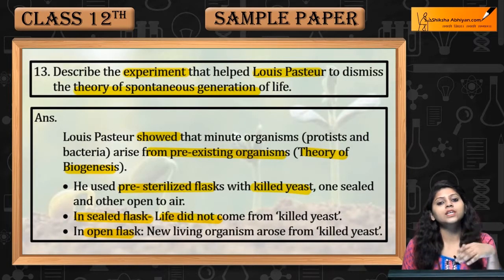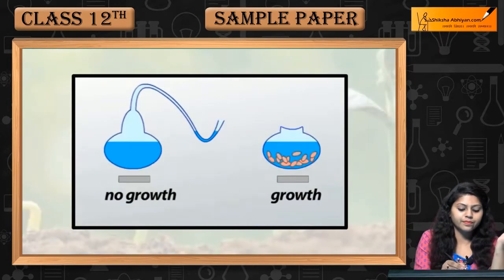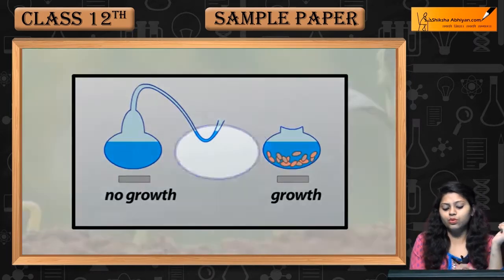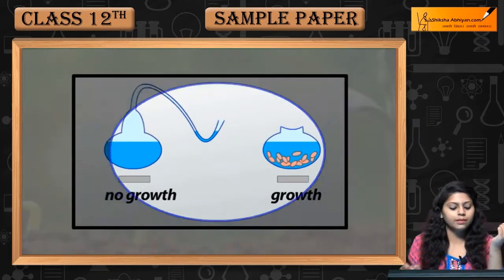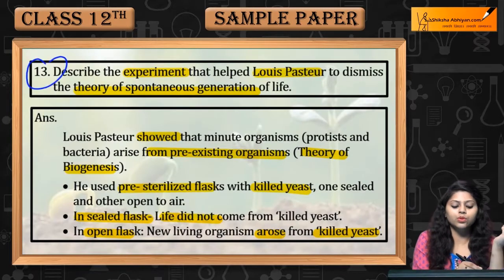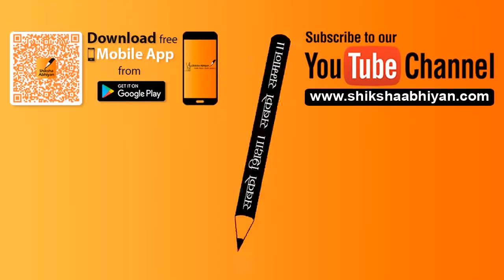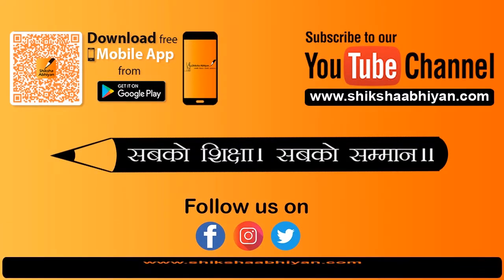Whereas in the open flask, new organisms arose from killed yeast. No growth अगर flask बंद है, और अगर open है तो growth show हुई microbes की. This was question number 13.